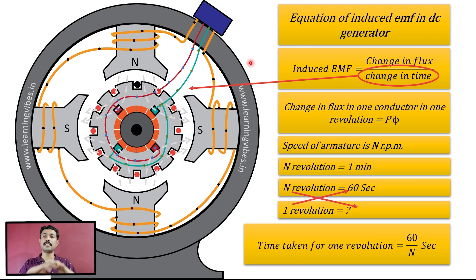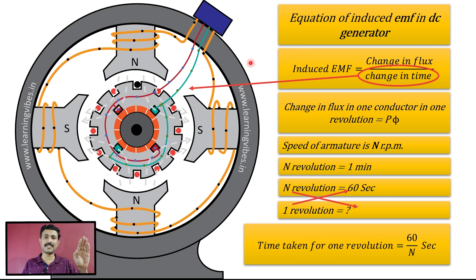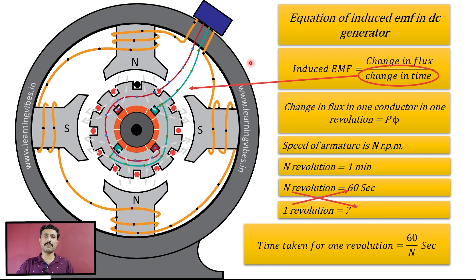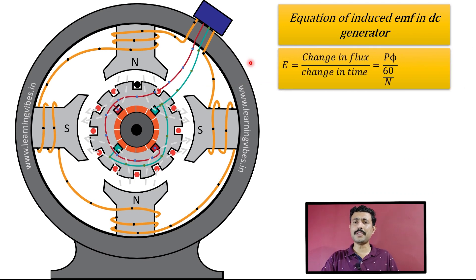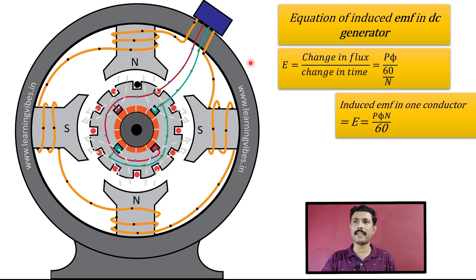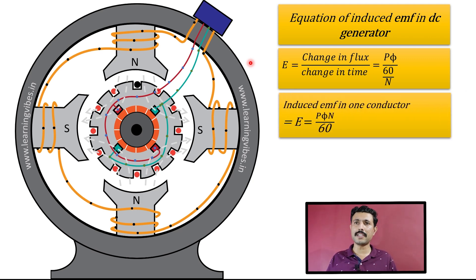So we have got the total change in flux, which is P × Φ, and the time to complete one revolution, which is 60/N. Now we combine them. Using E = change in flux / change in time, with change in flux = PΦ and change in time = 60/N, the induced EMF in one conductor is: E = PΦN / 60. This is very simple. But now there is a small twist — there is not only one conductor in the complete armature; there are Z conductors in total.